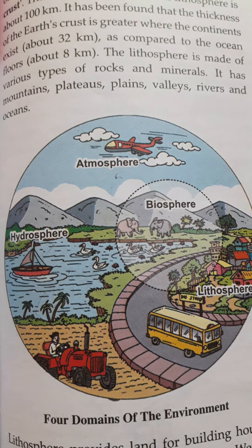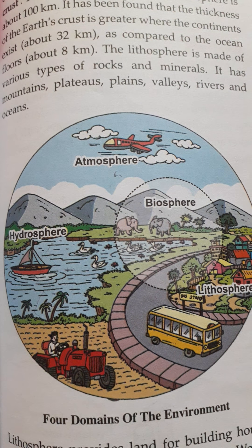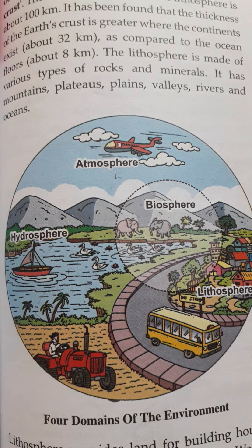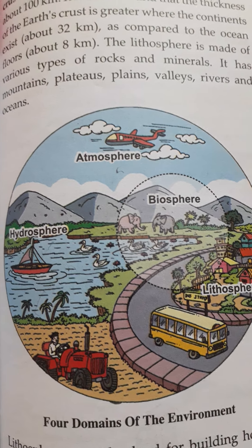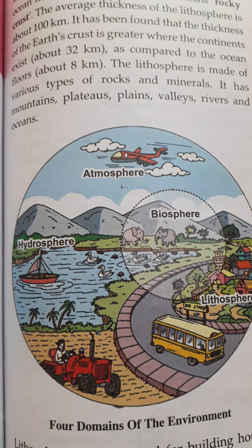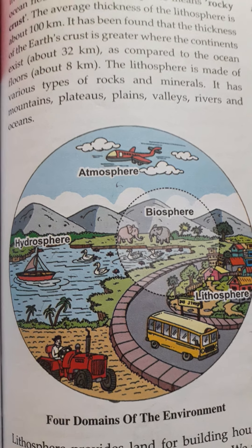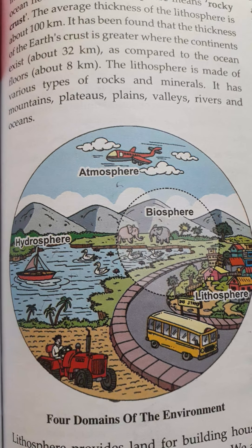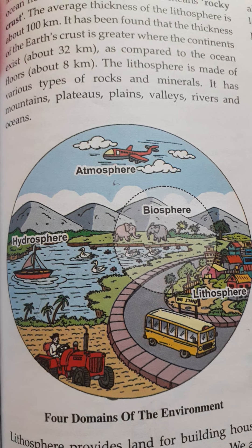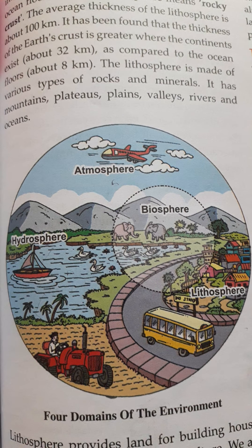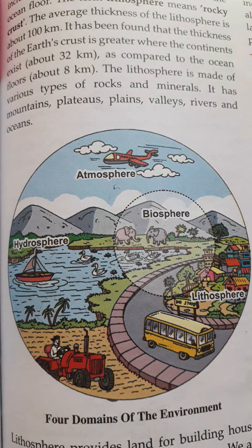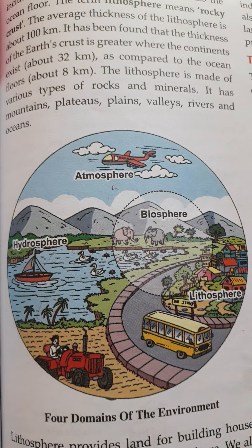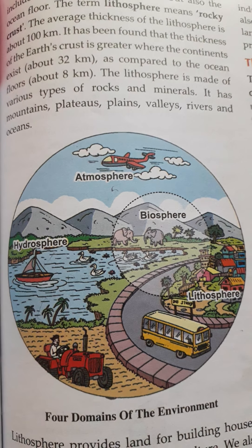Next is atmosphere. Atmosphere is a blanket of air that surrounds the earth. The exact thickness of this atmosphere goes up to 1600 kilometers from the surface of the earth.